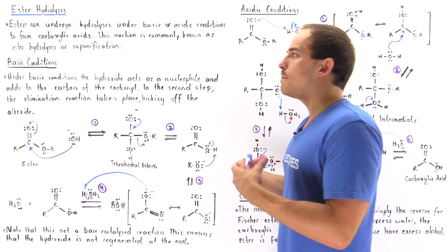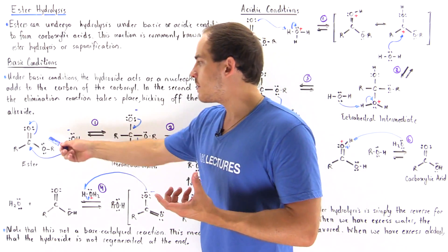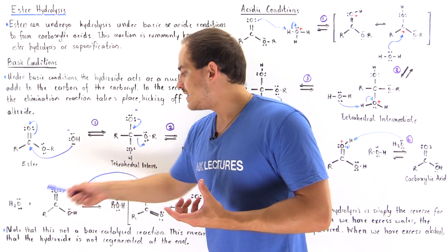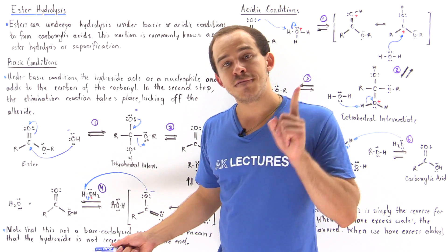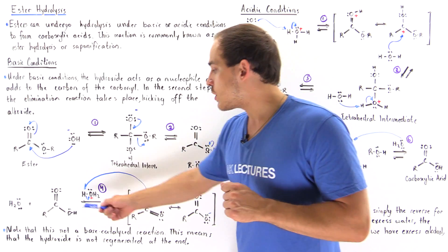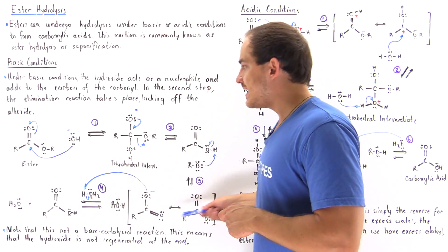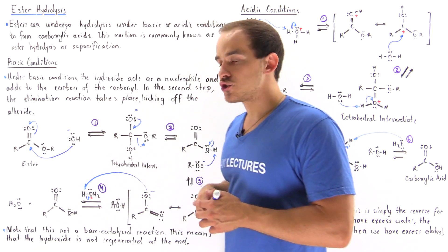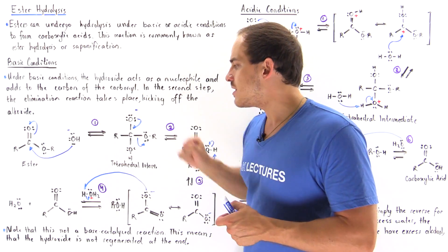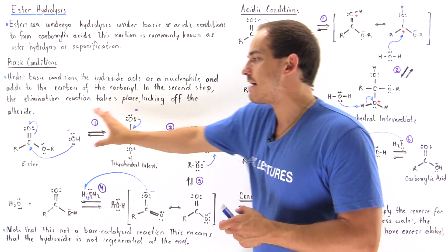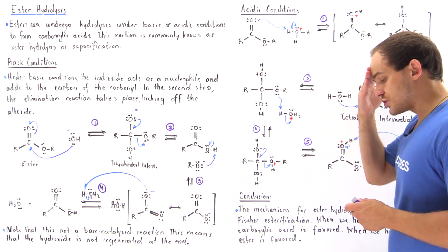Under basic conditions for ester hydrolysis, we transform an ester into the final product, our carboxylic acid. In Fischer esterification, we transform our carboxylic acid into our ester. Going this way, we have ester hydrolysis; going in reverse, we have the Fischer esterification, under basic conditions.